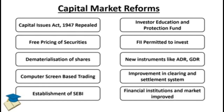Investor education programs were started through the Investor Education and Protection Fund. Foreign institutional investors were permitted to invest in Indian companies, which further supported the growth of Indian companies. New instruments like ADRs (American Depository Receipts) and GDRs (Global Depository Receipts) were introduced. NSDL (National Securities Depository Services Limited) and CDSL (Central Depository Services Limited) were started to act as depositories of company shares, improving clearing and settlement systems.